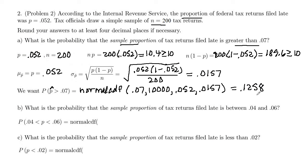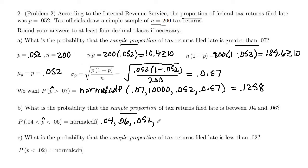So there's a 12.58% probability that the proportion of tax returns filed late would be greater than 0.07. Next, they ask for the probability that the sample proportion P-hat of tax returns filed late is between 4% and 6%. That means: what is the probability that P-hat is between 0.04 and 0.06? The mean and standard deviation remain the same: 0.052 and 0.0157.